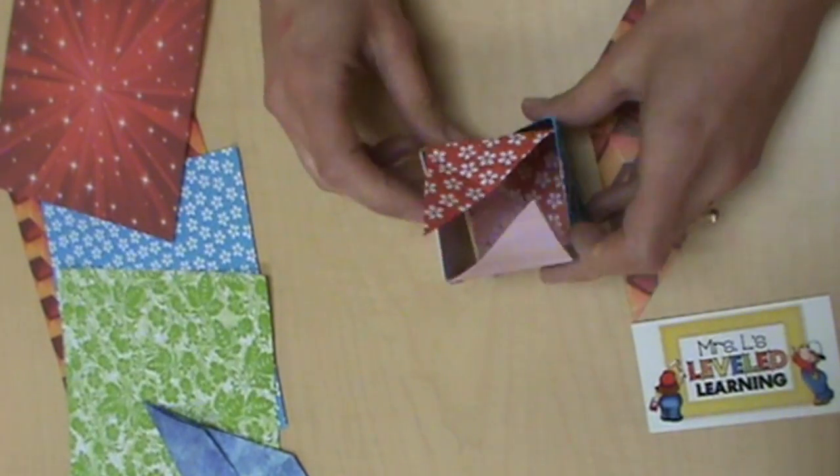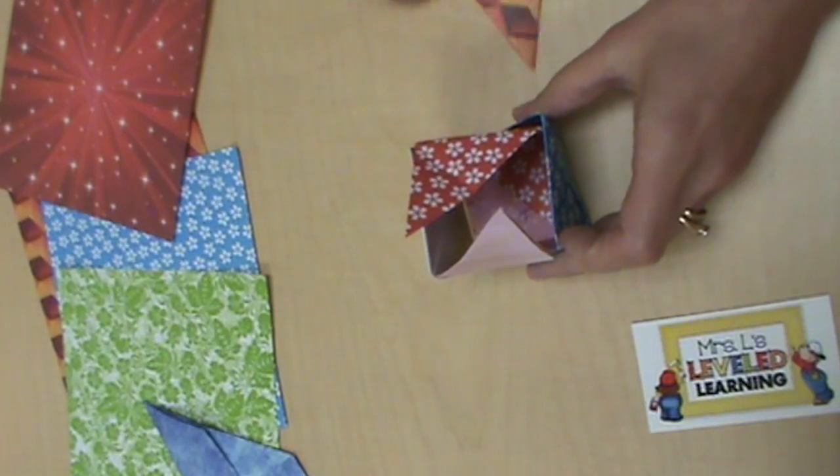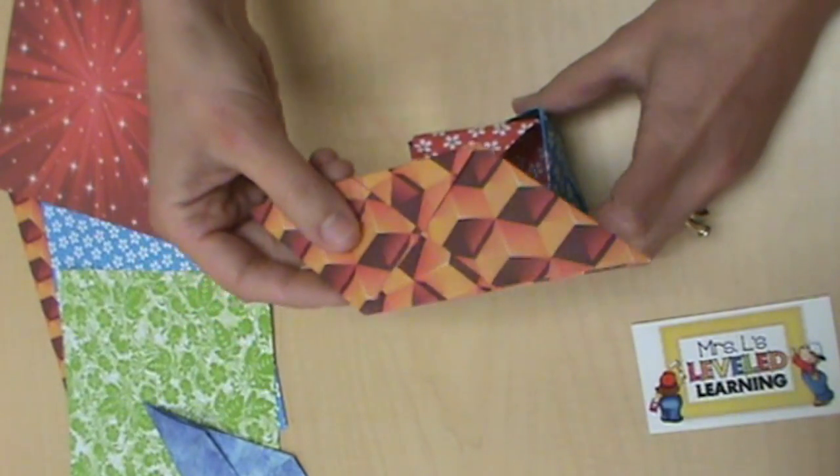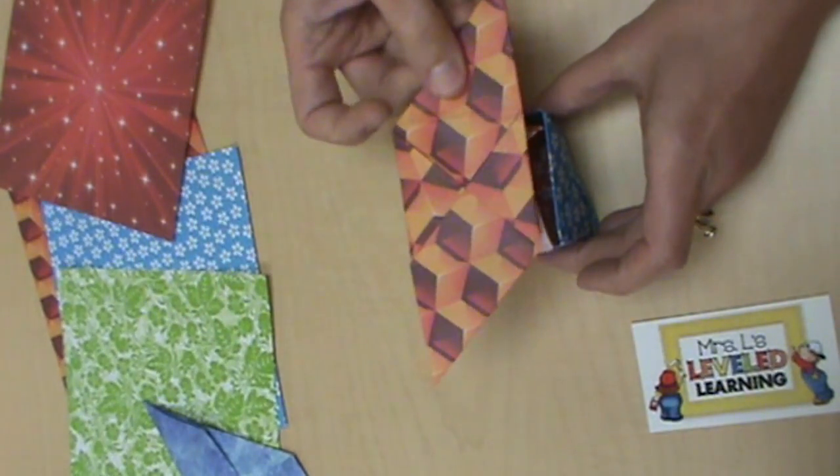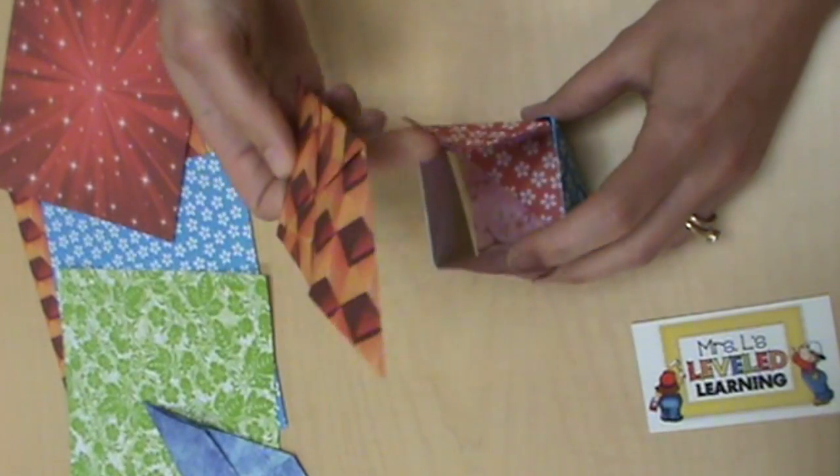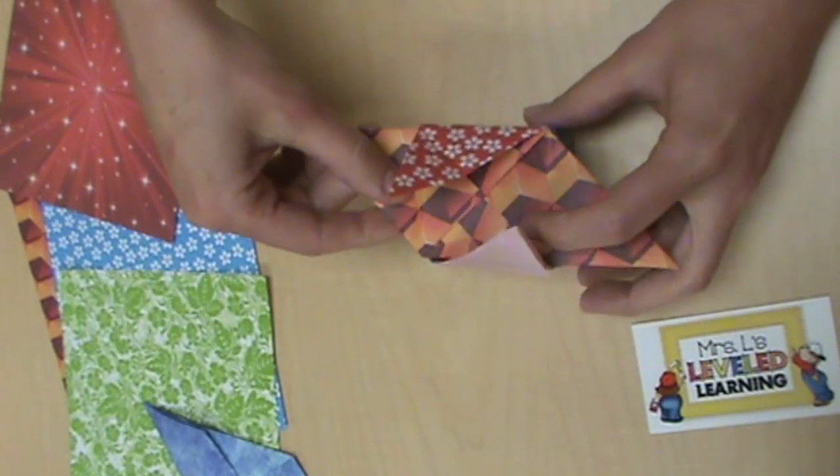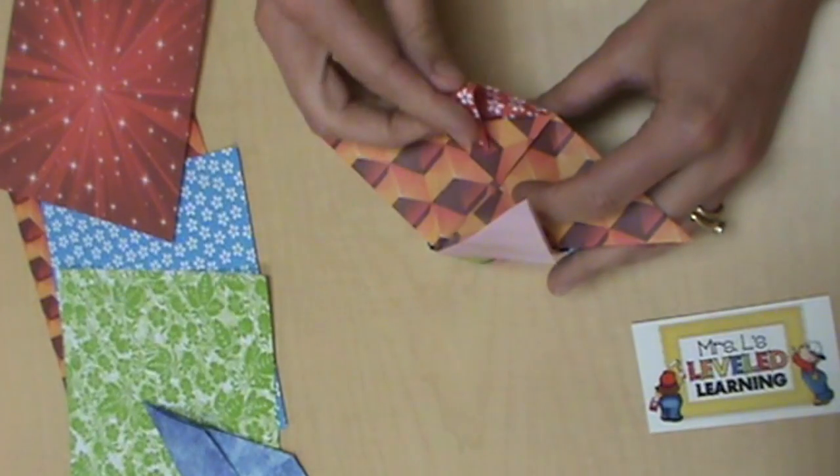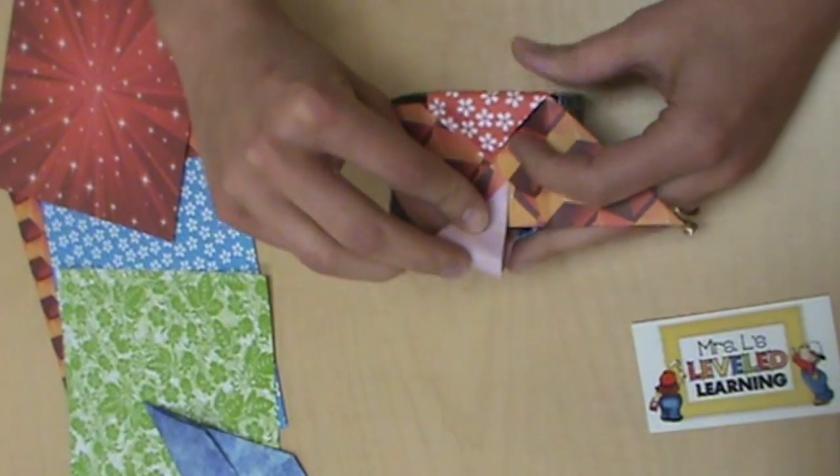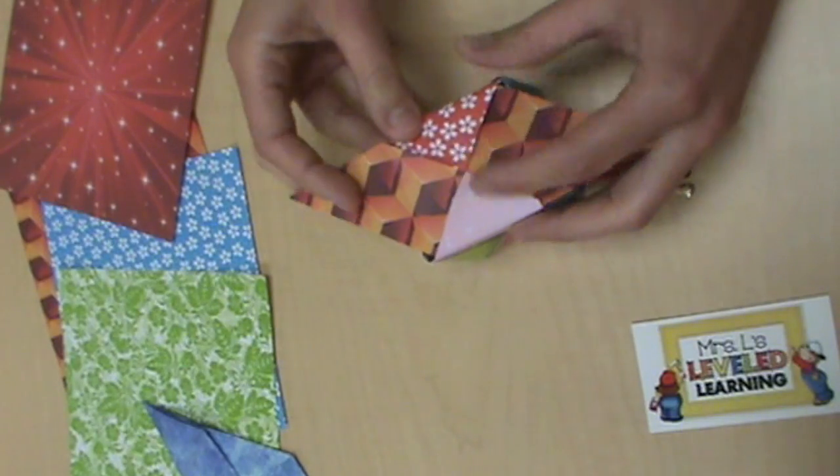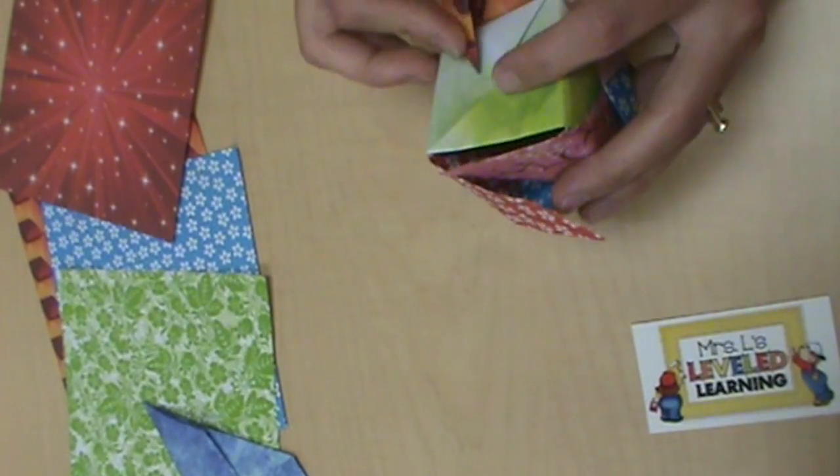We'll start with the top. Figure out which way your piece should go to make sense. You'll want to make sure those triangle flaps can tuck into the pocket. And then tuck in any extra flaps by bending them around the other faces.